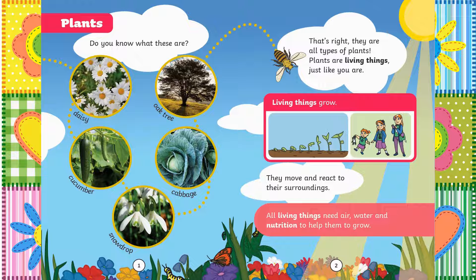Plants are living things just like you are. Living things grow. They move and react to their surroundings. All living things need air, water and nutrition to help them grow.